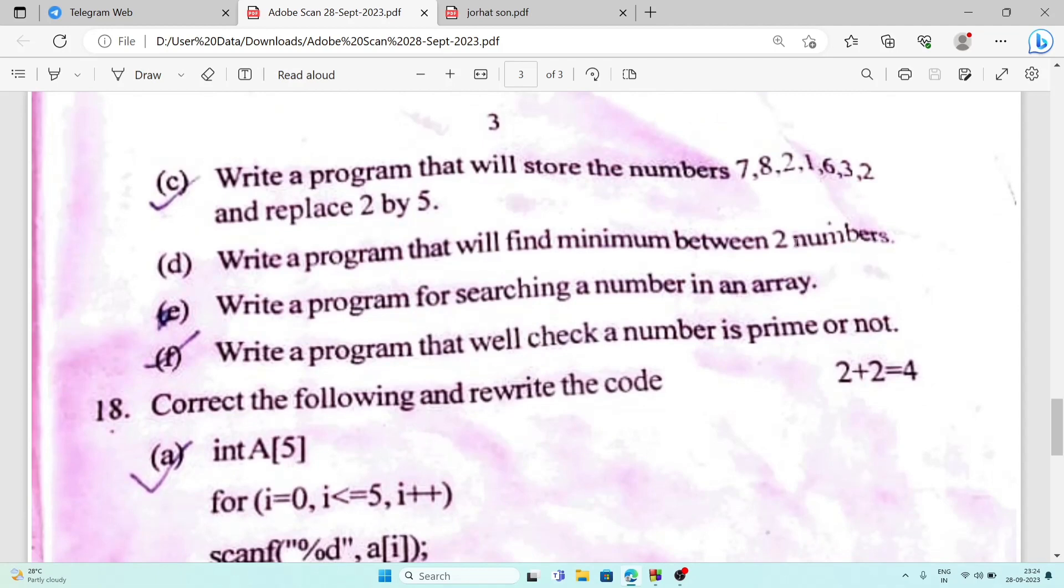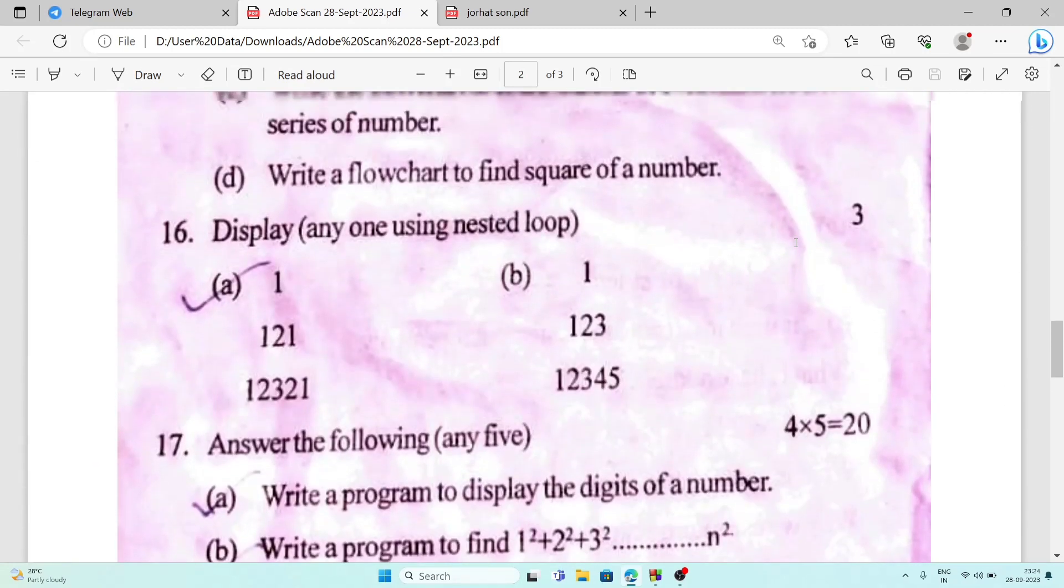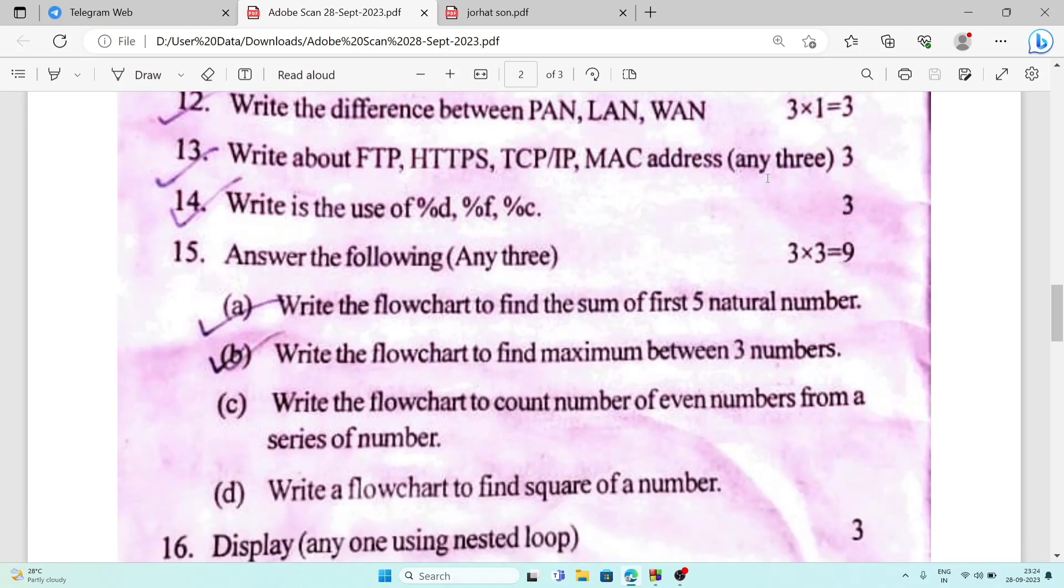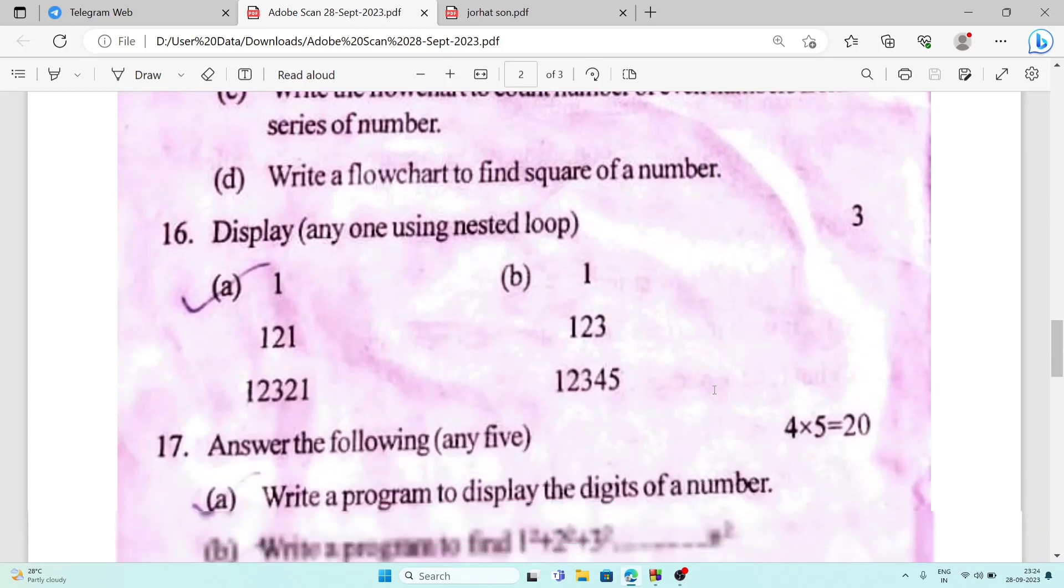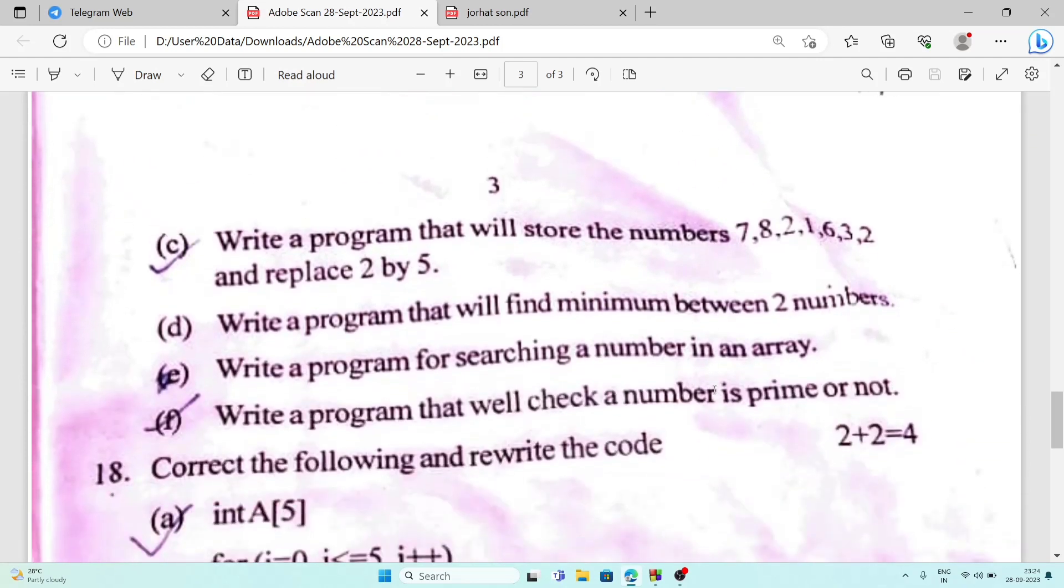Next, write a program that will find maximum between two numbers. In the flowchart it's given to find maximum between three numbers, but they're asking for two numbers. It's the same, just you will take two variables a and b and compare whether a is greater than b or not.